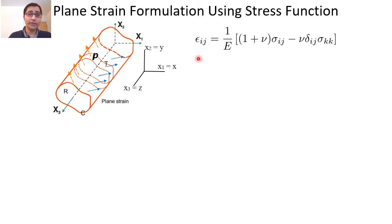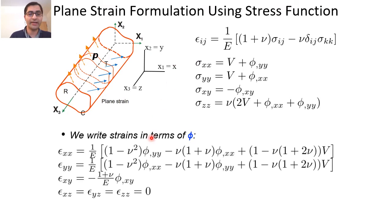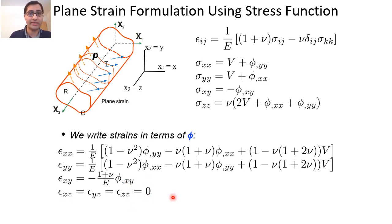For strains as a function of the stress function, we use Hooke's law between strain and stress. This is the relation between stress and phi, so we simply substitute these relations into Hooke's law. Doing that, we get the relations for strain as a function of the Airy stress function. Note that epsilon_zz becomes zero, as expected for the plane strain case.